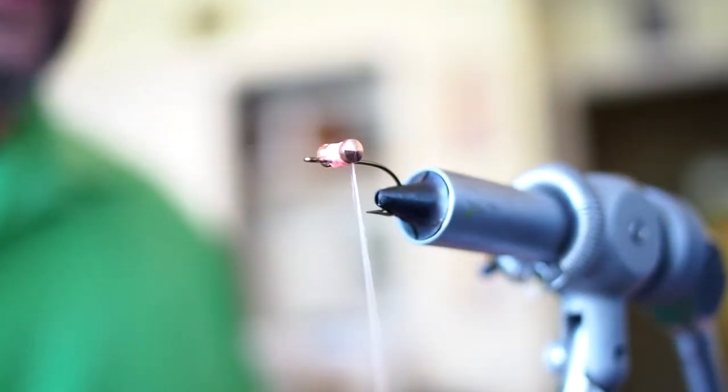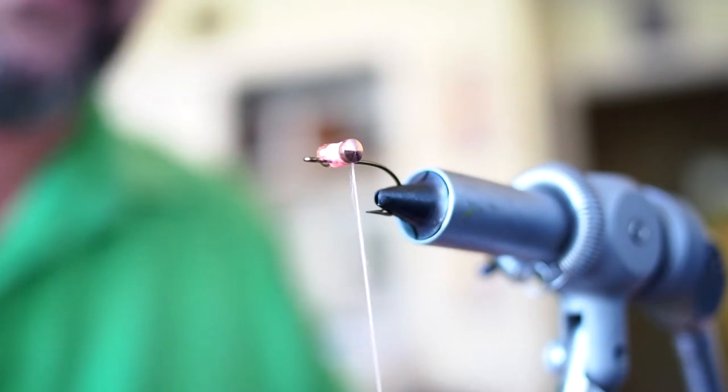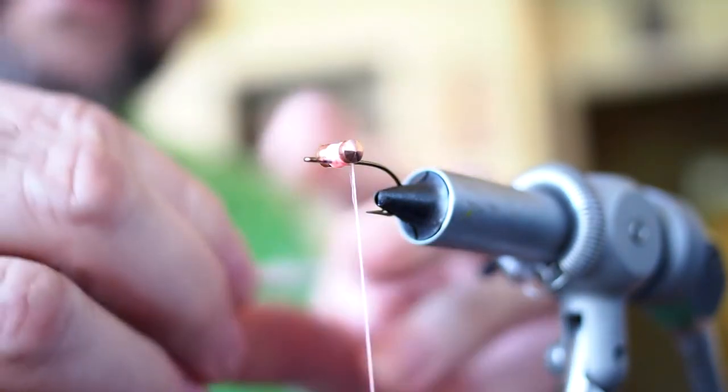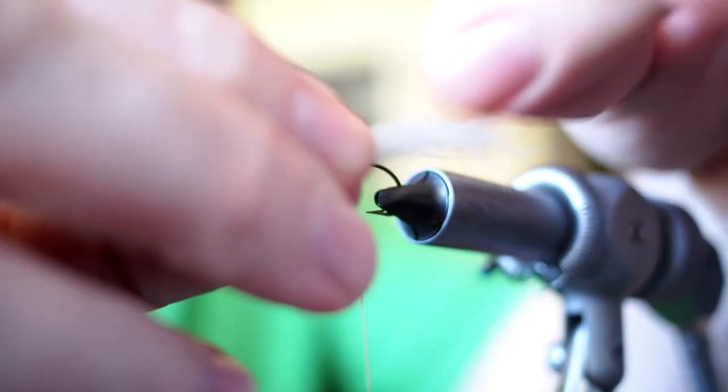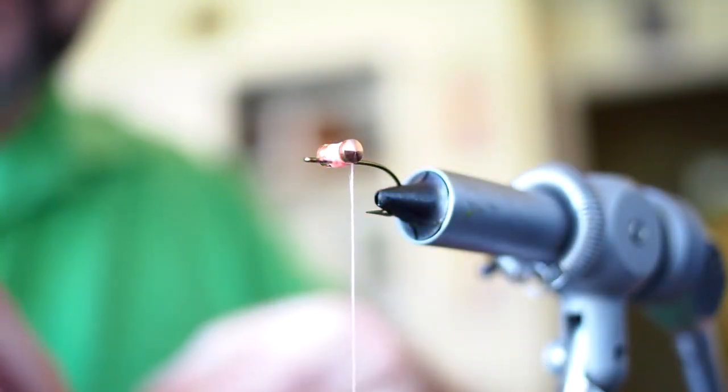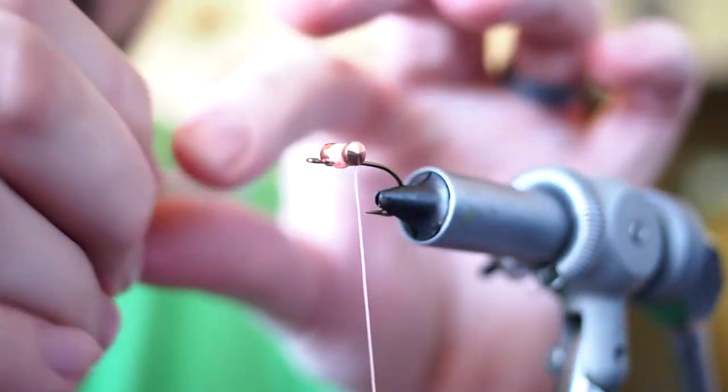So we're going to take some kip tail, and you don't need a ton of it. In this particular fly, I'm going to be tying pink over white. Take a bit of kip tail and pull out any of the wild bits.